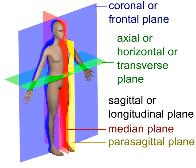An anatomical plane is a hypothetical plane used to transect the body, in order to describe the location of structures or the direction of movements. In human and animal anatomy, three principal planes are used.